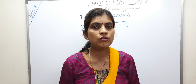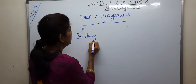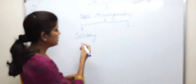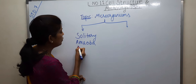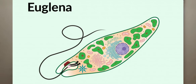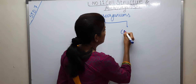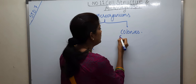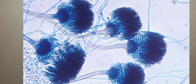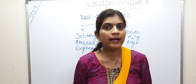Among microorganisms, some live singly and are called solitary microorganisms. Examples of microorganisms living singly are amoeba and euglena. Some microorganisms live in groups, which we call colonies. Examples of microorganisms living in colonies are fungi and algae.